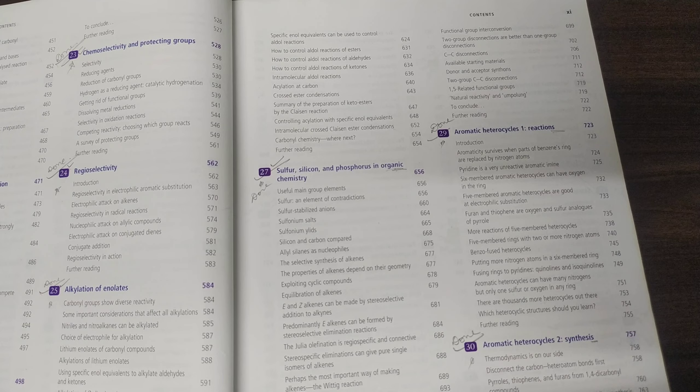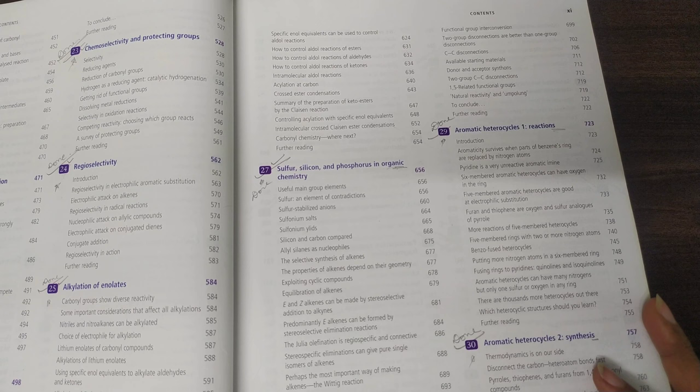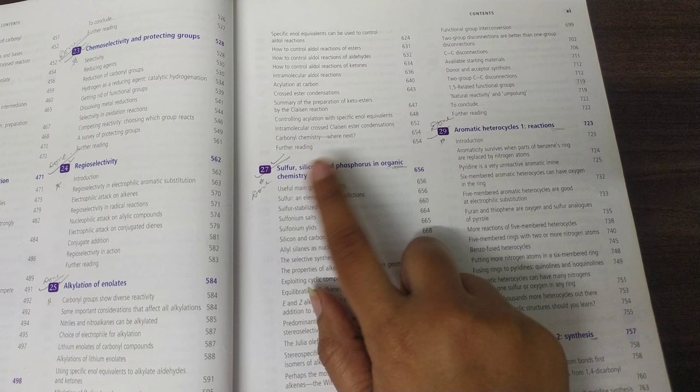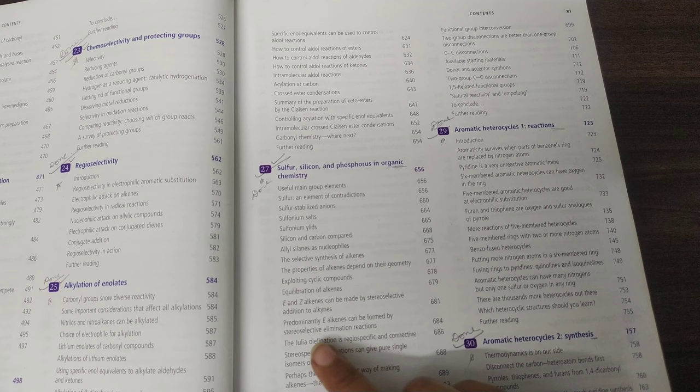First chapter that will be useful to you will be the 27th chapter - sulfur, silicon, and phosphorus in organic chemistry. This chapter has very important reactions like Julia olefination. This is important and you can get directly asked questions from this book.